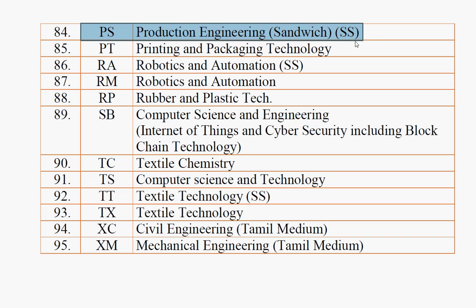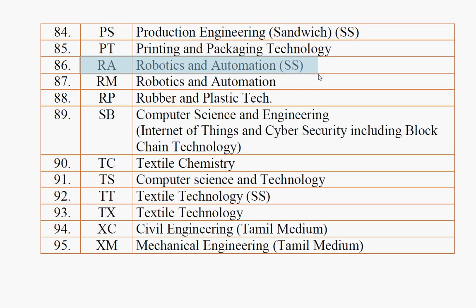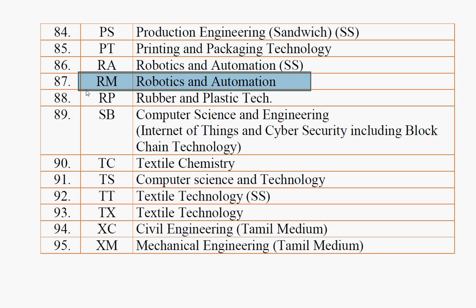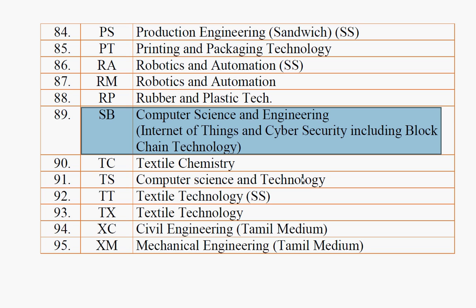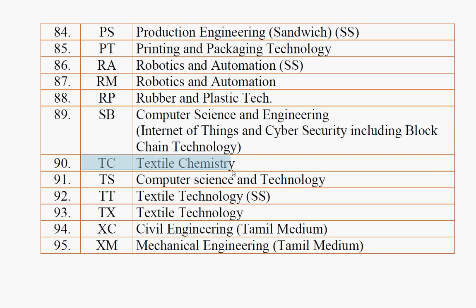Protection Engineering sandwich — PS. In the sandwich course versus normal course, there is a difference in syllabus but almost similar scope. Printing and Packing Technology — PT. Robotics and Automation self-supporting — RA. Robotics and Automation — RM. Rubber and Plastic Technology — RP. Computer Science and Engineering: Internet of Things and Cyber Security including Blockchain Technology specialization — SB. Textile Chemistry — TC. Computer Science and Technology — TS. Textile Technology self-supporting — TT. Textile Technology — TX.